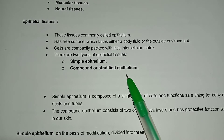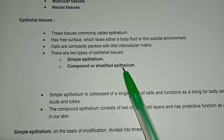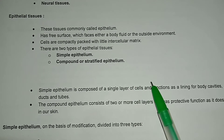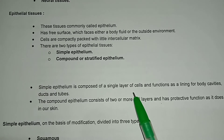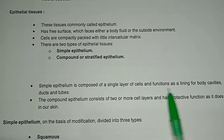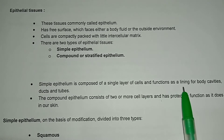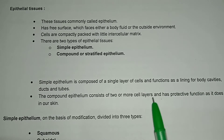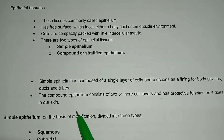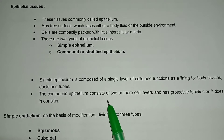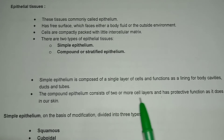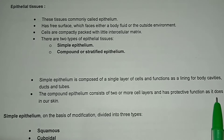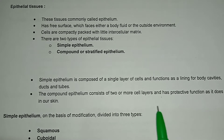Compound epithelium is also called stratified epithelium. Simple epithelium is composed of a single layer of cells and functions as a lining for body cavities, ducts, and tubes. The compound epithelium consists of two or more cell layers and has a protective function, as it does in our skin.